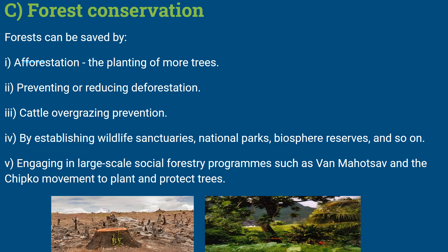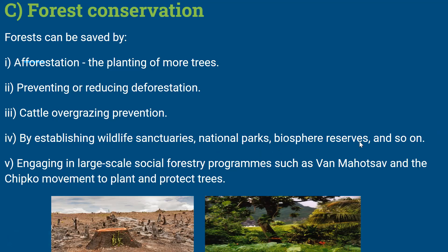Third is preventing cattle overgrazing — cattle such as cows, buffaloes, and goats that graze can destroy plants, so this must be stopped. Fourth is establishing wildlife sanctuaries, national parks, and biosphere reserves to protect forests. Fifth is engaging in large-scale social forestry programs such as Van Mahotsav and the Chipko Movement to plant and protect trees — in the Chipko Movement, people hugged trees to prevent them from being cut.